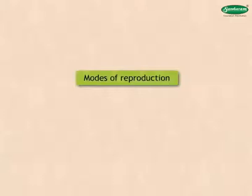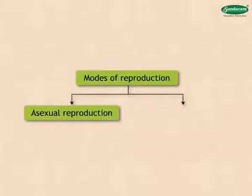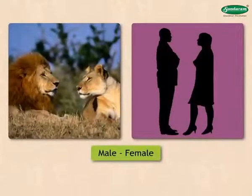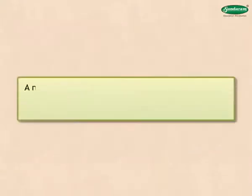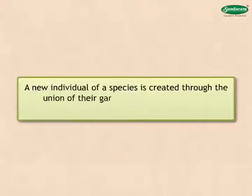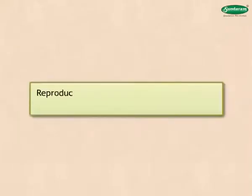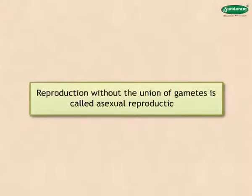There are two important modes of reproduction: asexual reproduction and sexual reproduction. The male-female distinction can be seen in many species of living things. A new individual of a species is created through the union of their gametes — such reproduction is called sexual reproduction. Reproduction without the union of gametes is called asexual reproduction.